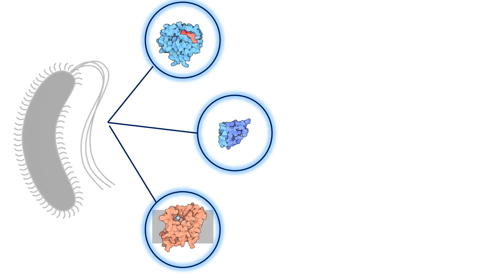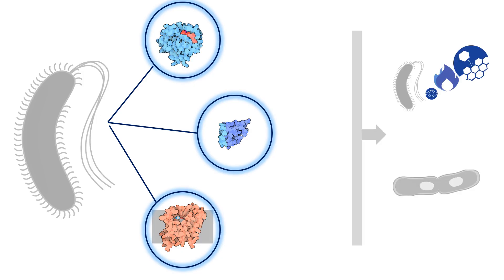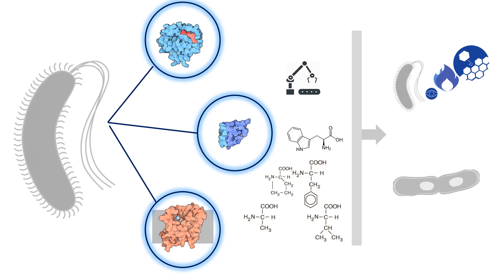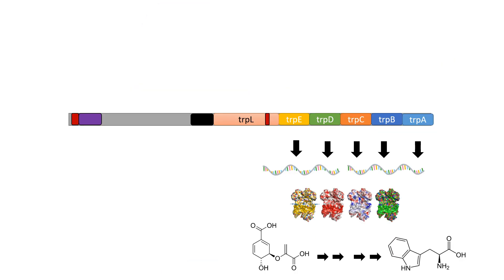Bacteria need to produce specific enzymes to meet metabolic demands and to reproduce. To produce these enzymes or proteins, bacteria must first produce the raw materials — the amino acids. One such amino acid is tryptophan. The process by which bacteria produce tryptophan involves the tryptophan operon, where the enzymes encoded by its genes convert chorismic acid into tryptophan in sequential steps.